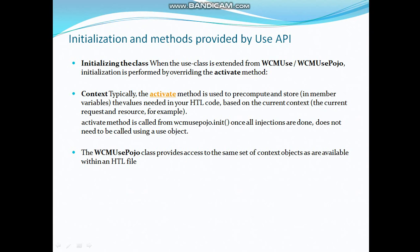We have discussed that the activate method will automatically be called once you create an object. Regarding the Use API, there are normally two classes: WCMUse and WCMUsePojo. From AEM 6.1 onwards we use WCMUsePojo, which has been rewritten by Adobe from scratch. It has more security features than WCMUse, so we focus on WCMUsePojo when creating our custom classes.